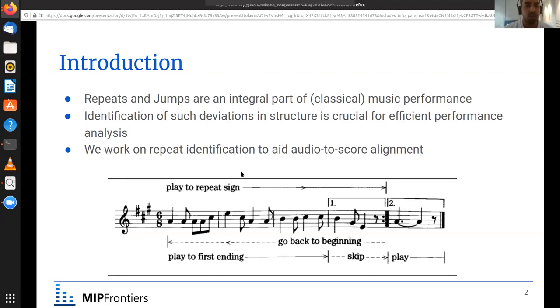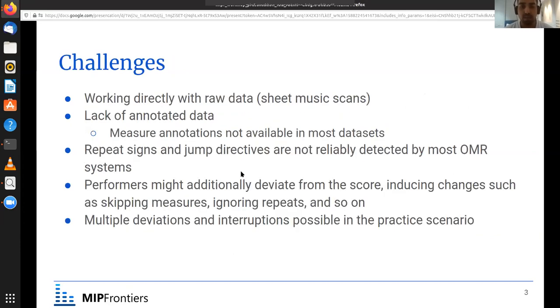So now we'll talk briefly about the challenges for this task. We are working directly with the raw data, that is the scanned images of sheet music. So it doesn't have all the annotations that we require for the experiments and the ground truth is also not there. So we need the measure annotations and the annotation of the jump and the repeat directives. For that we will need to employ OMR.